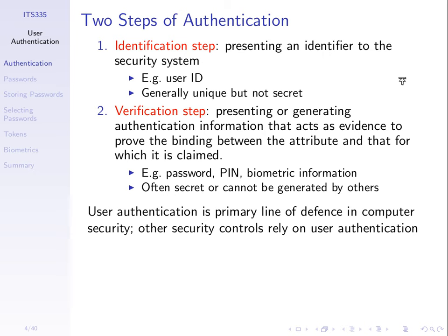There are two steps involved with authentication: the identification step and the verification step. You authenticate yourself every day on different computer systems — websites, logins to the network lab, Moodle, and so on. First, you identify yourself — you say who you are by presenting some information, usually a user name or email address. It is generally unique within that system.